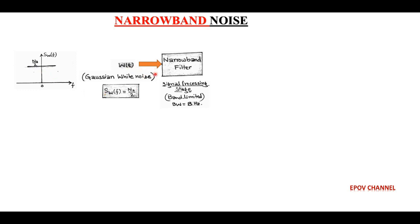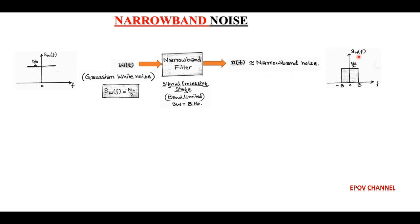After filtering, the Gaussian white noise W(t) gets converted into filtered noise or narrowband noise. W(t) is called the front end receiver noise, and the power spectral density of narrowband noise has a value of N0/2 but is limited between minus B to plus B, which is the same as the bandwidth of the narrowband filter.